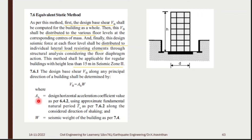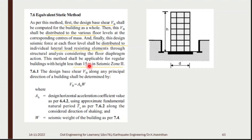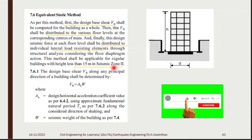AH is the horizontal acceleration — the design horizontal acceleration coefficient as per clause 6.4.2. W is the seismic weight of the building, i.e., its self weight. The Equivalent Static Method can be used for heights up to 15 meters. For seismic zones 3, 4, or 5, you cannot use this method even if the height is within 15 meters.